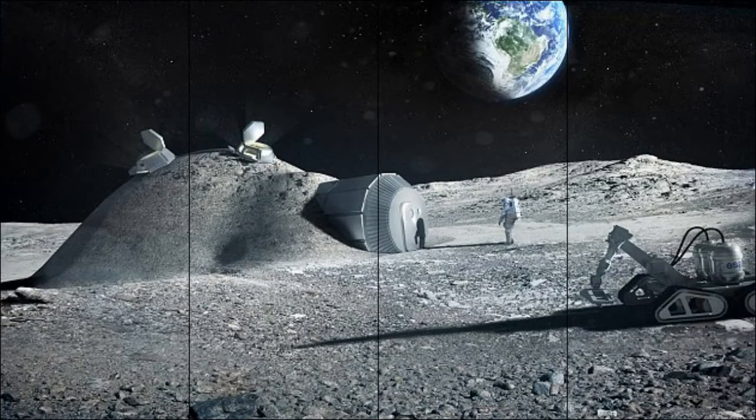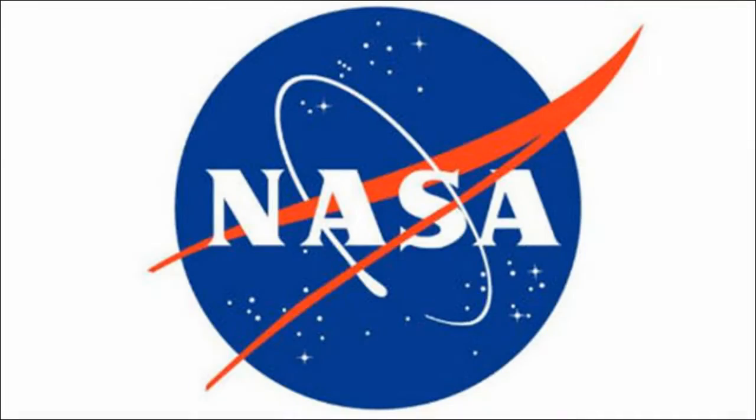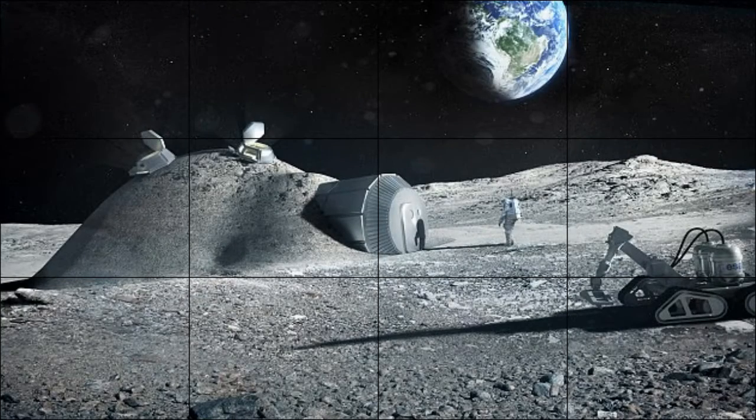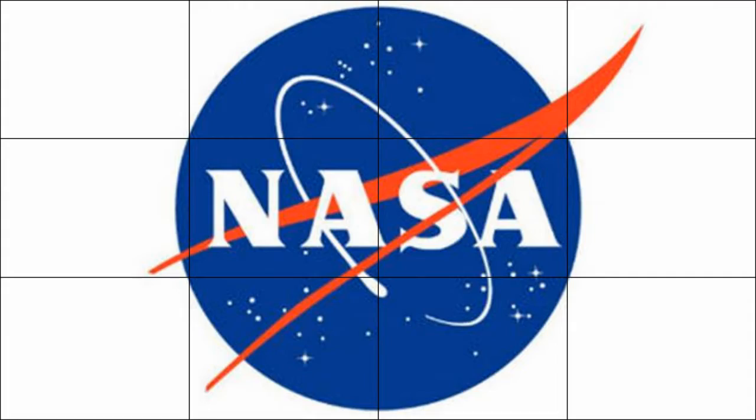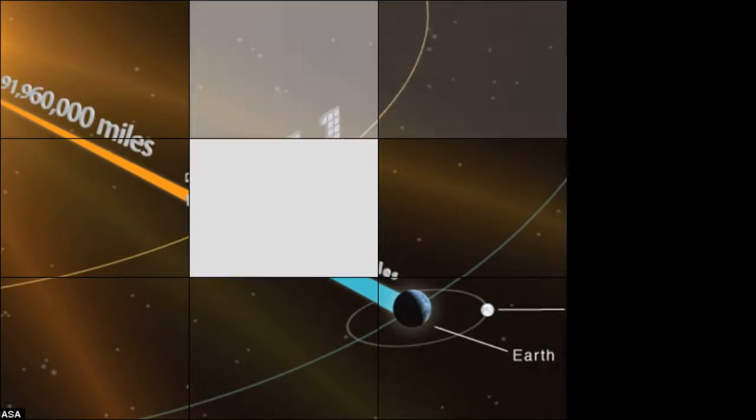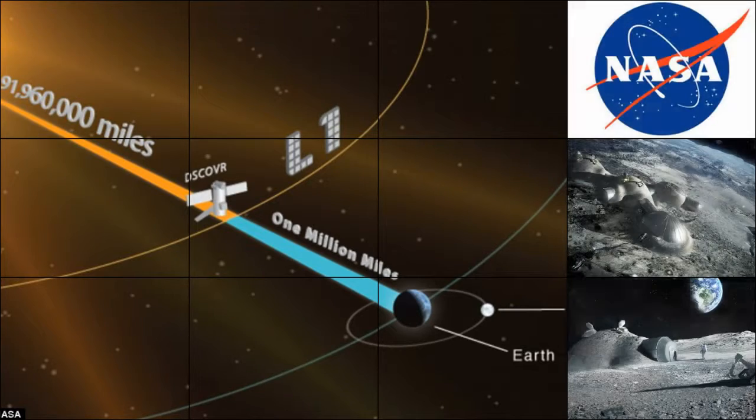LROC is a system of three cameras mounted on the LRO spacecraft. Two narrow-angle cameras capture high-resolution black and white images. The third wide-angle camera captures moderate-resolution images using filters to provide information about the properties and color of the lunar surface.